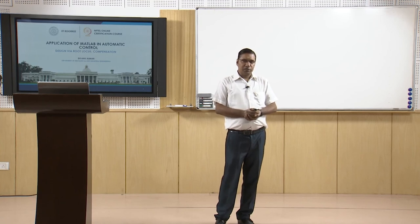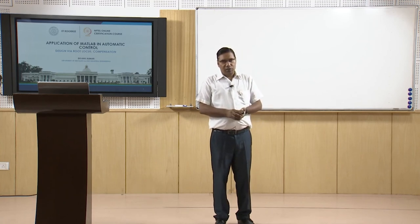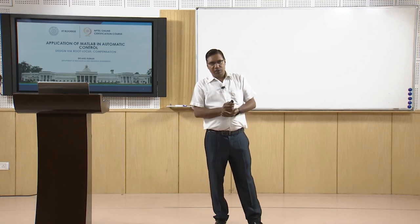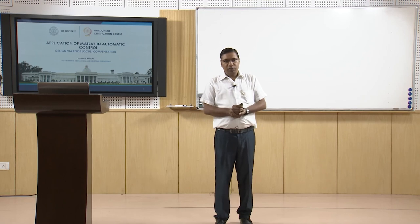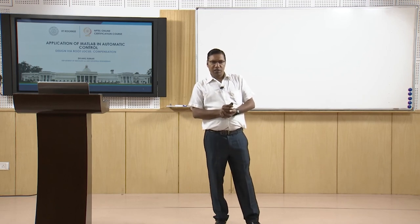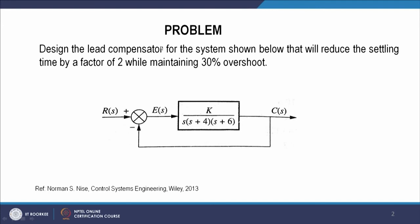The condition is that the root locus passes through the dominant or desired pole points. Here we have one problem that we will discuss as theory, and then we will discuss the MATLAB codes. This problem is taken from Norman S. Nise's Control Systems Engineering. The problem is that we have to design a lead compensator for the system shown below that will reduce the settling time by a factor of 2 while maintaining 30 percent overshoot.